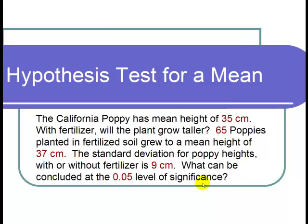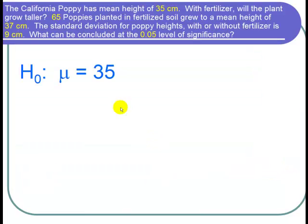So let's first start by writing down our null and alternative hypotheses. We want to find out whether or not the fertilizer will make the plant grow taller, and that means taller than 35 centimeters. So H0 is saying that no it won't, it's still going to be 35 centimeters. So H0 is μ equals 35. We use the population mean because a hypothesis test always tests for a population parameter. So we use μ and not x̄.